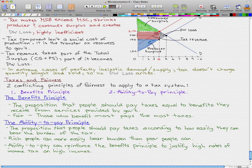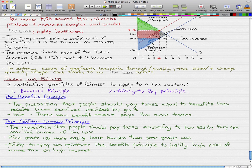Now the ability to pay principle is the proposition that people should pay taxes according to how easily they can bear the burden of the tax. A rich person can more easily bear the burden than a poor person can. So in this perspective, the ability to pay principle can reinforce the benefits principle to justify the high rates of income tax on high incomes.